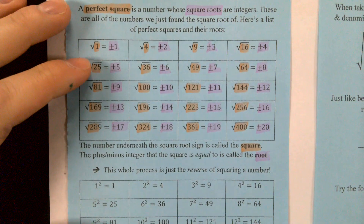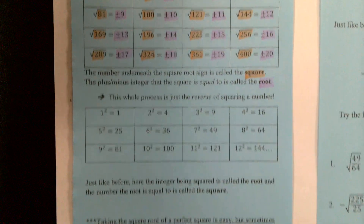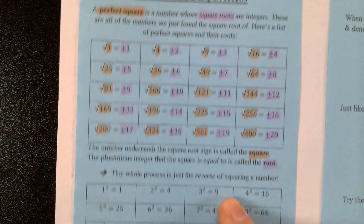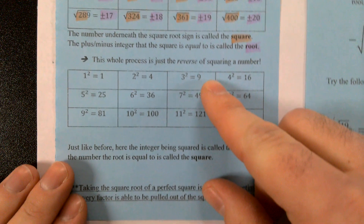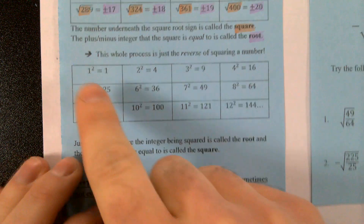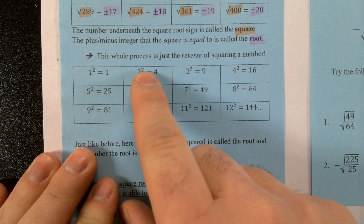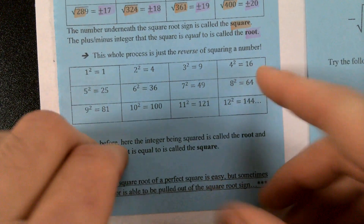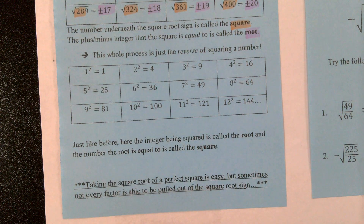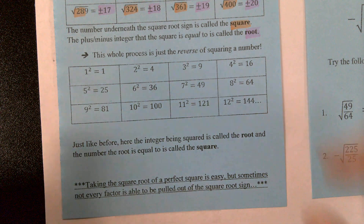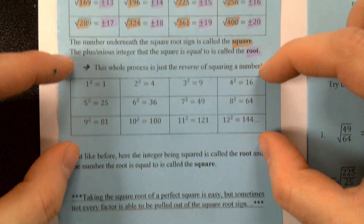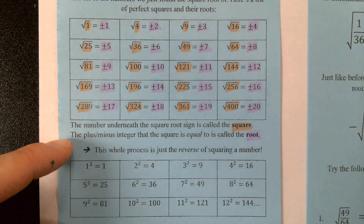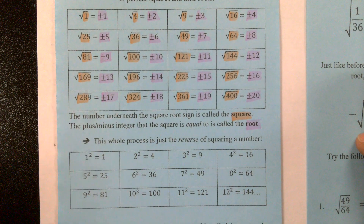This process is literally just the reverse of squaring a number. Here's that same exact chart from the other side: 1 squared equals 1, 2 squared equals 4, 3 squared equals 9, 4 squared equals 16, and so on. This is what we're more familiar with. Today, all we're doing is the inverse — the same exact thing, just backwards.